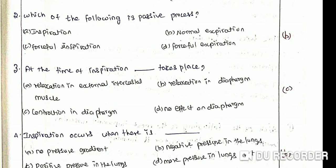At the time of inspiration, which of the following does not take place? Option A: Relaxation in external intercostal muscles. Option B: Relaxation in diaphragm. Option C: Contraction in diaphragm. Option D: No effects on diaphragm. The correct answer is Option C: Contraction in diaphragm.